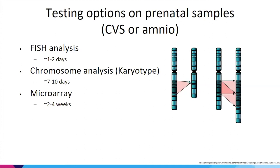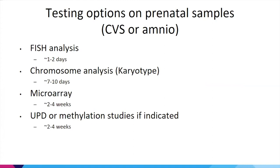Depending on the implicated chromosome, uniparental disomy studies or methylation studies may be indicated. Methylation studies identify whether UPD has occurred and are available only on amniocentesis samples, not CVS. UPD studies require blood samples from both biological parents, so if a donor was used and one biological parent is unavailable, we would need to divert to methylation testing. Single gene testing may also be indicated depending on carrier status and gene location, also taking two to four weeks.